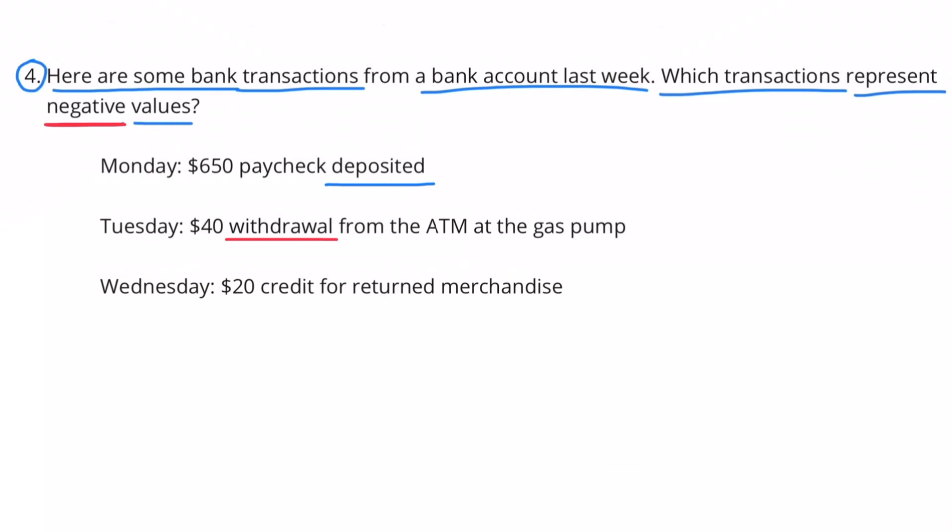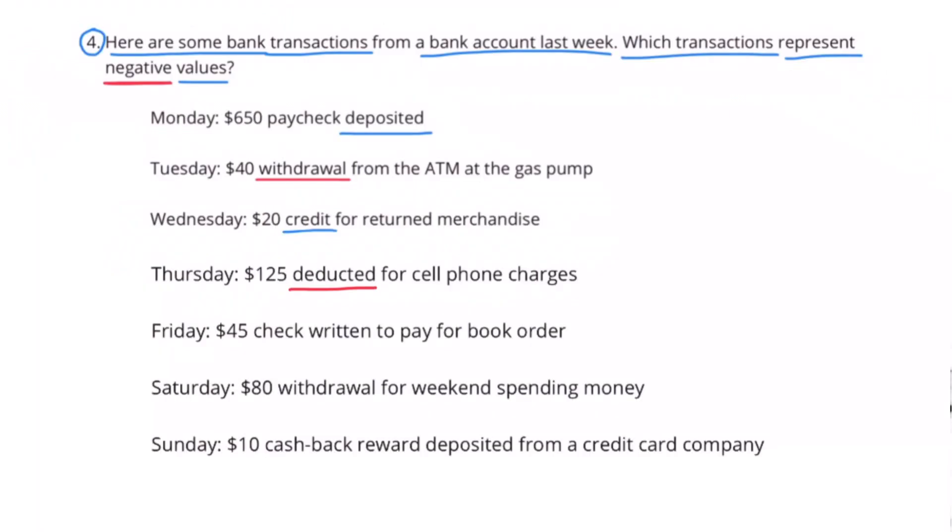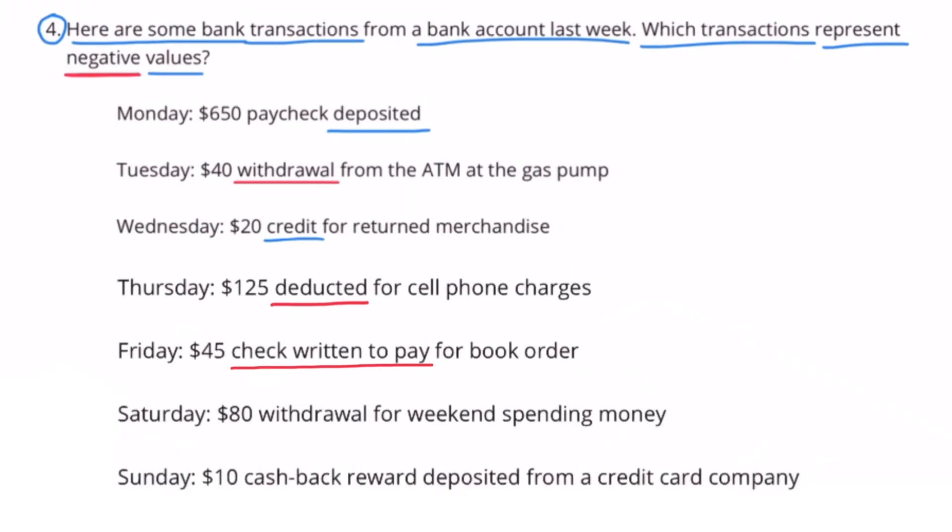Wednesday, $20 credit for returned merchandise. That's a positive because merchandise was returned and $20 was credited back to their account. Thursday, $125 deducted for cell phone charges. That's a negative because $125 was deducted from the account. Friday, $45 check written to pay for book order. That would be a negative because a check was written to pay for a book order.